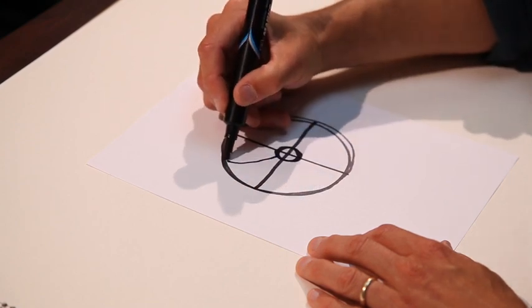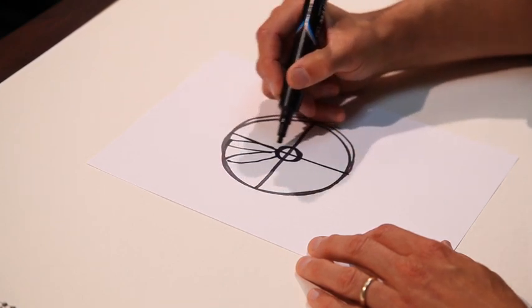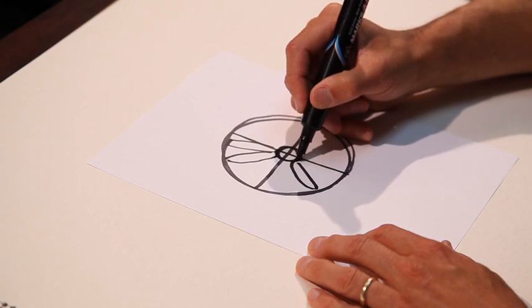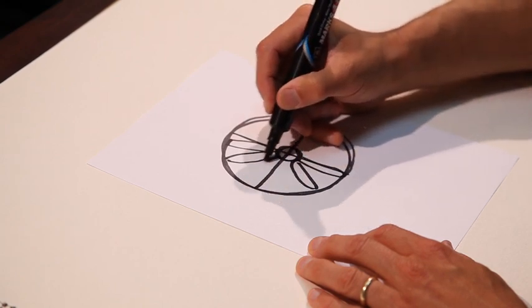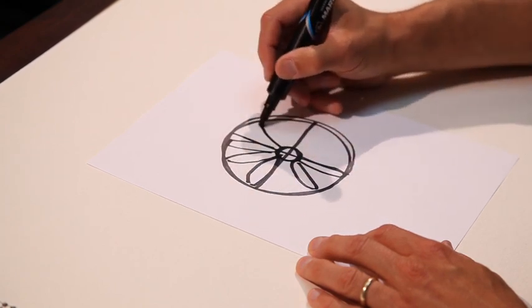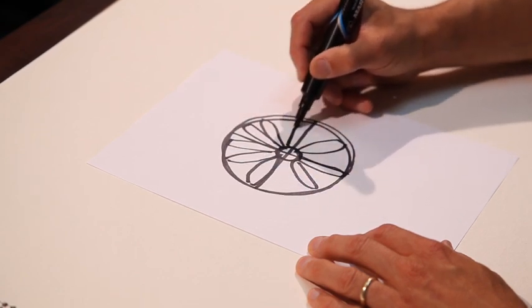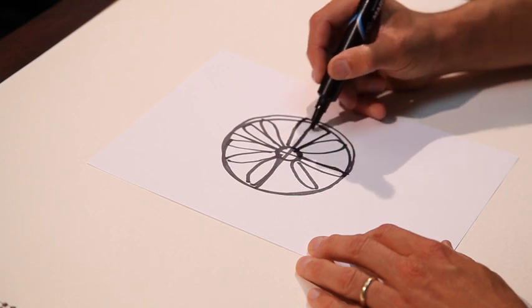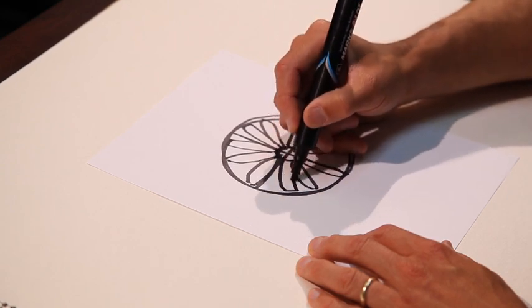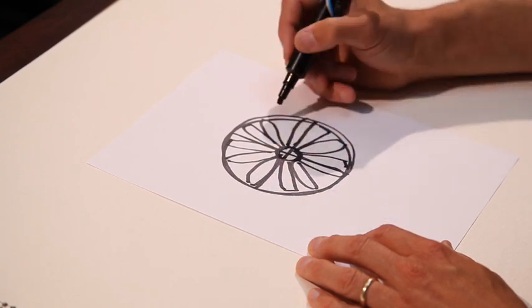From there, the outside edge of this circle will help me determine the length of my petals. And there's a symmetrical daisy.